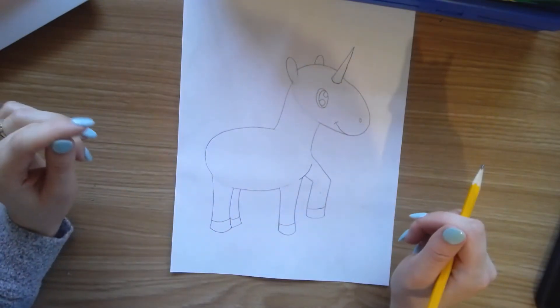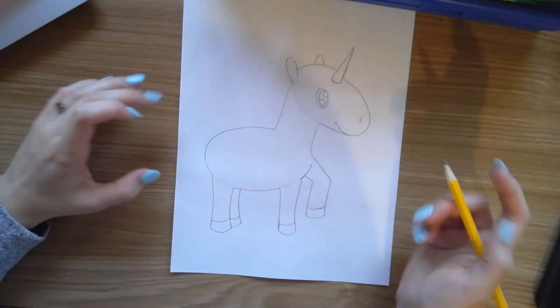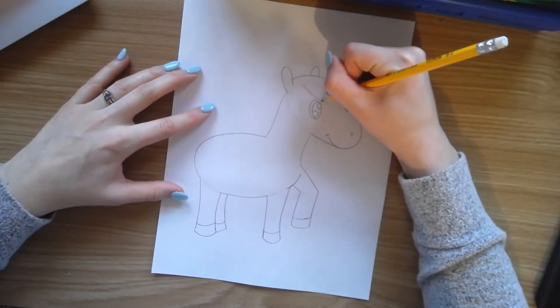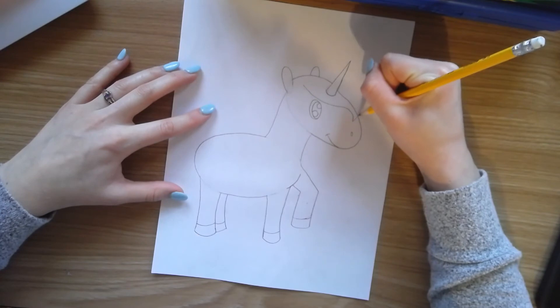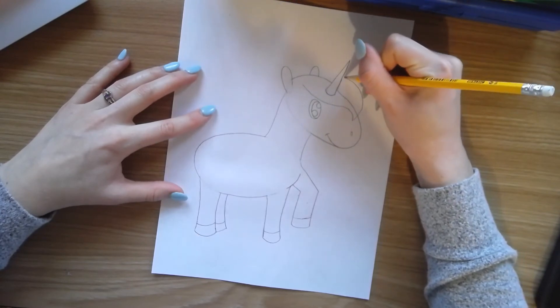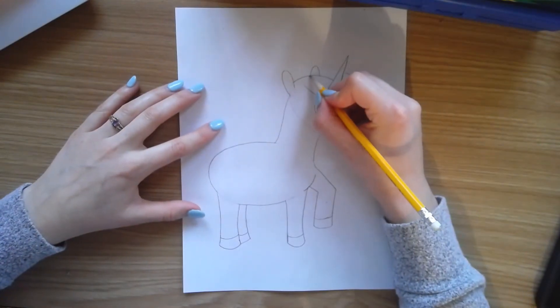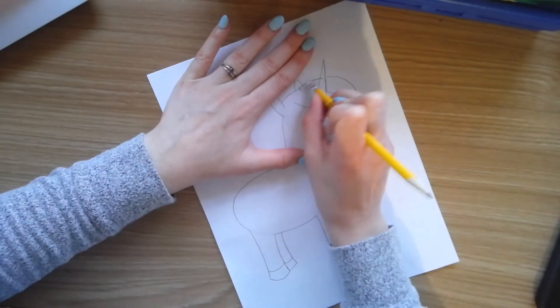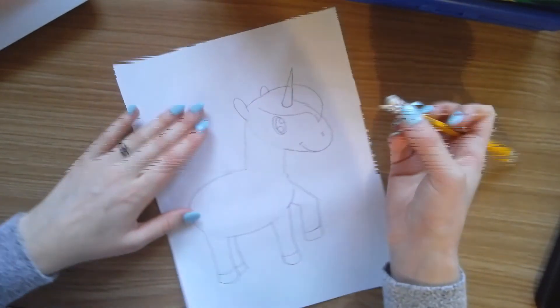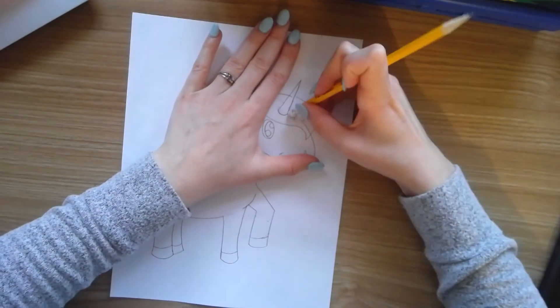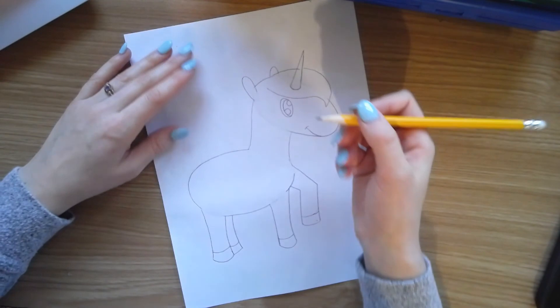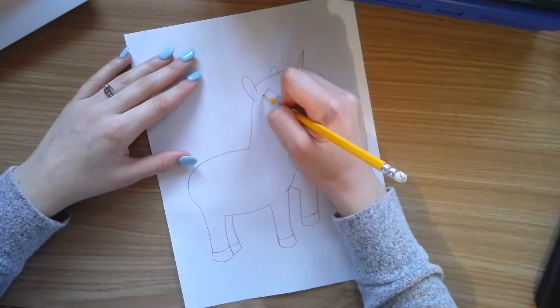Now I'm going to be adding some of the details like the tail and the mane. So the mane can come up. Draw a little bump like that and erase the extra lines from your oval. Next we can draw some hair in front of the ear.